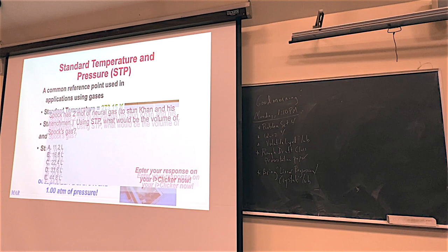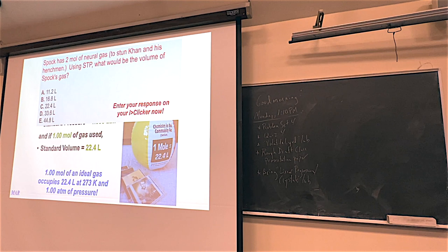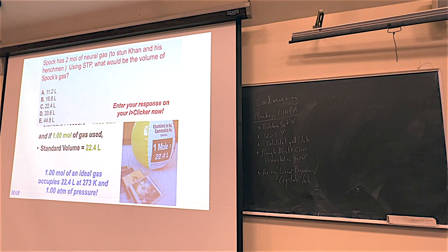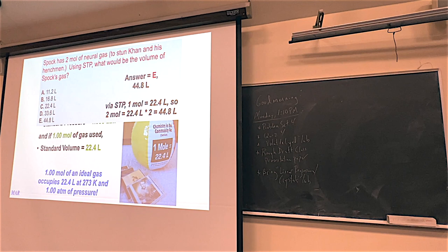Here's another kind of question — a Star Trek reference. In one of the original Star Trek episodes, Khan took over the Enterprise, and Spock used what's called neural gas to stun all of Khan's supporters. Say Spock used two moles of neural gas at STP — what would be the volume? If one mole is 22.4 liters and two moles were used, then two times 22.4 equals 44.8 liters.